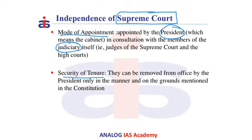The second point is the security of tenure. Judges can be removed from office by the President only in the manner prescribed in the Constitution. The removal process is very tedious, and so far no judge has been impeached in the entire history of the Indian Constitution.